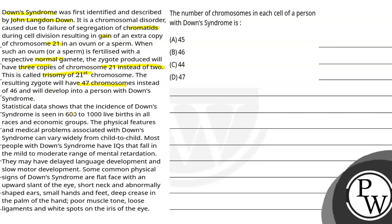Statistical data shows that the incidence of Down syndrome is seen in 600 to 1000 live births in all races and economic groups. The physical features and medical problems associated with Down syndrome can vary widely from child to child. Most people with Down syndrome have IQs that fall in the mild to moderate range of mental retardation, and they may have delayed language development and slow motor development.